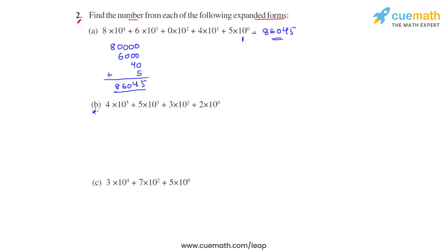Similarly, in part b we have 4 times 10 raised to 5, so we write 4 followed by 5 zeros. Plus we have 5 times 10 raised to 3, so we write 5 followed by 3 zeros.